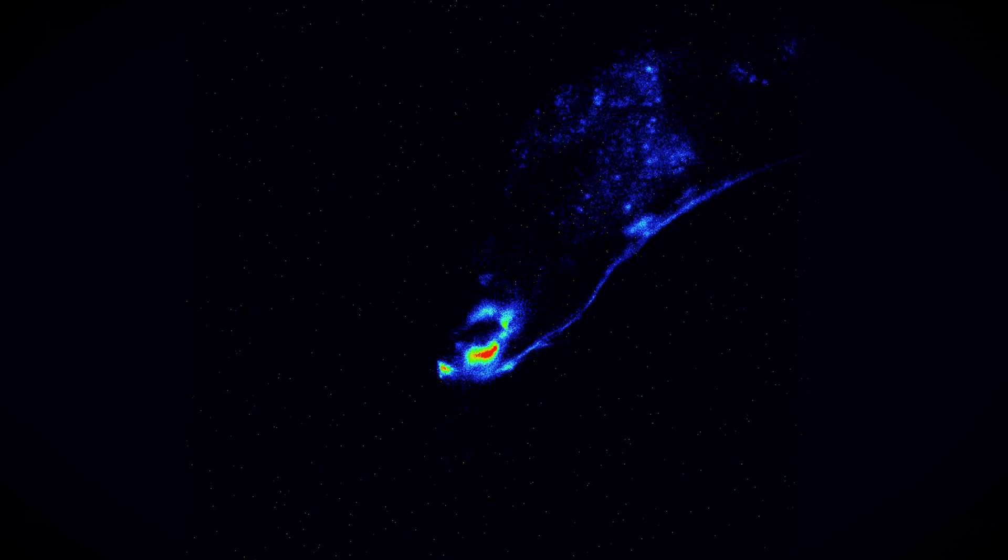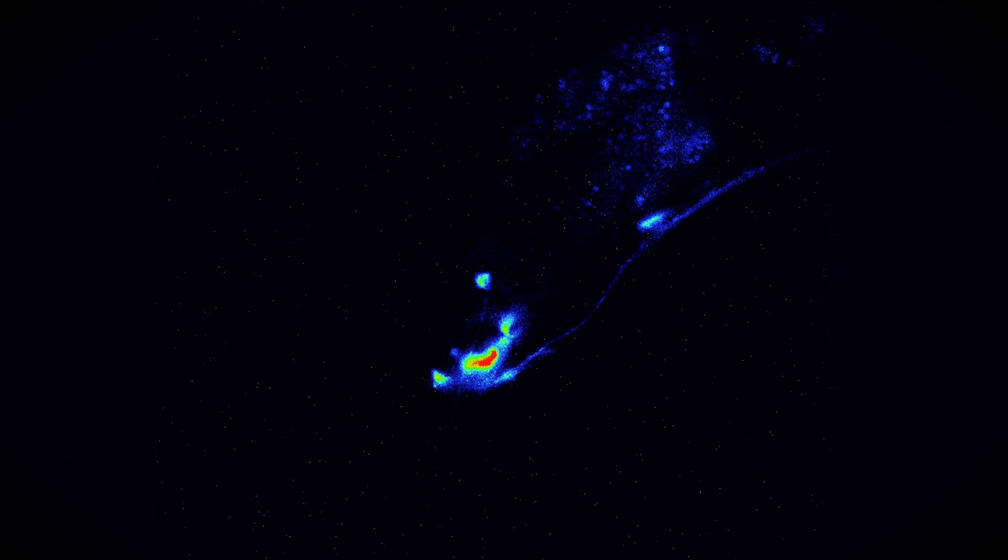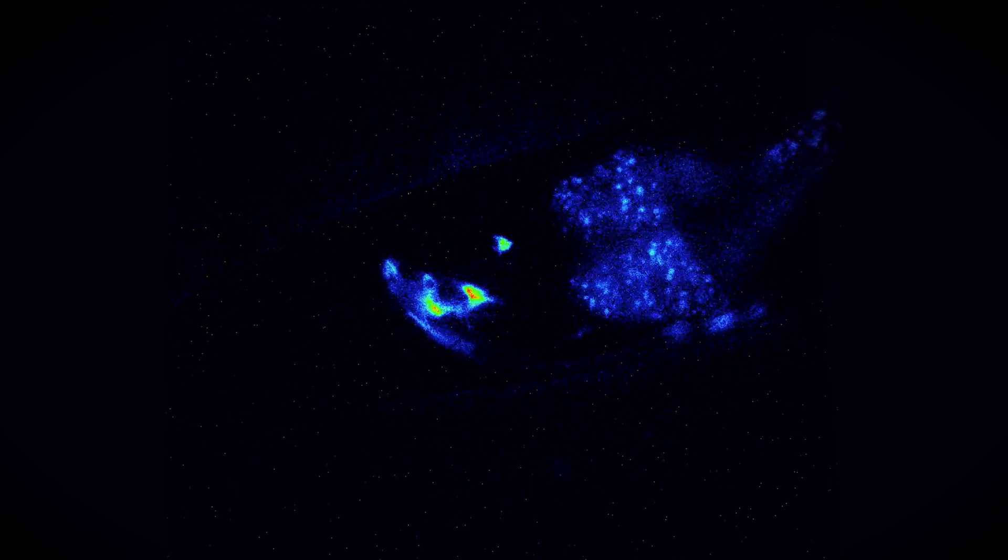Something that has been unexpected and interesting is that we found that these neurons that produce spitting are also involved in inhibiting the muscles of the mouth to make the worm stop eating.